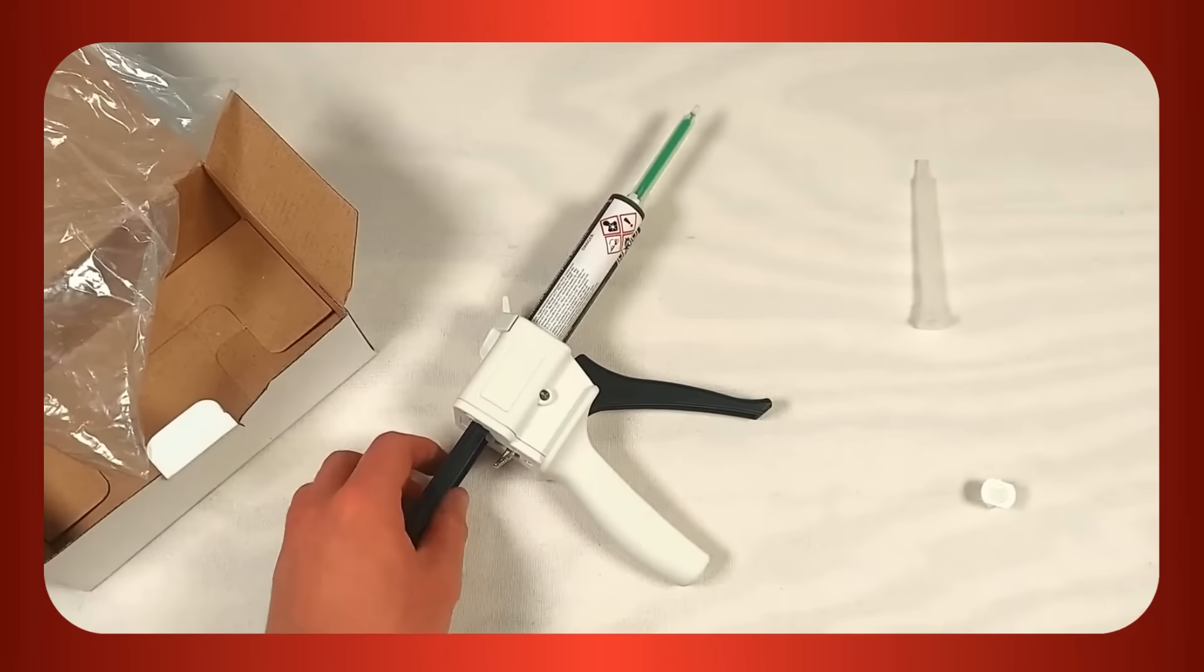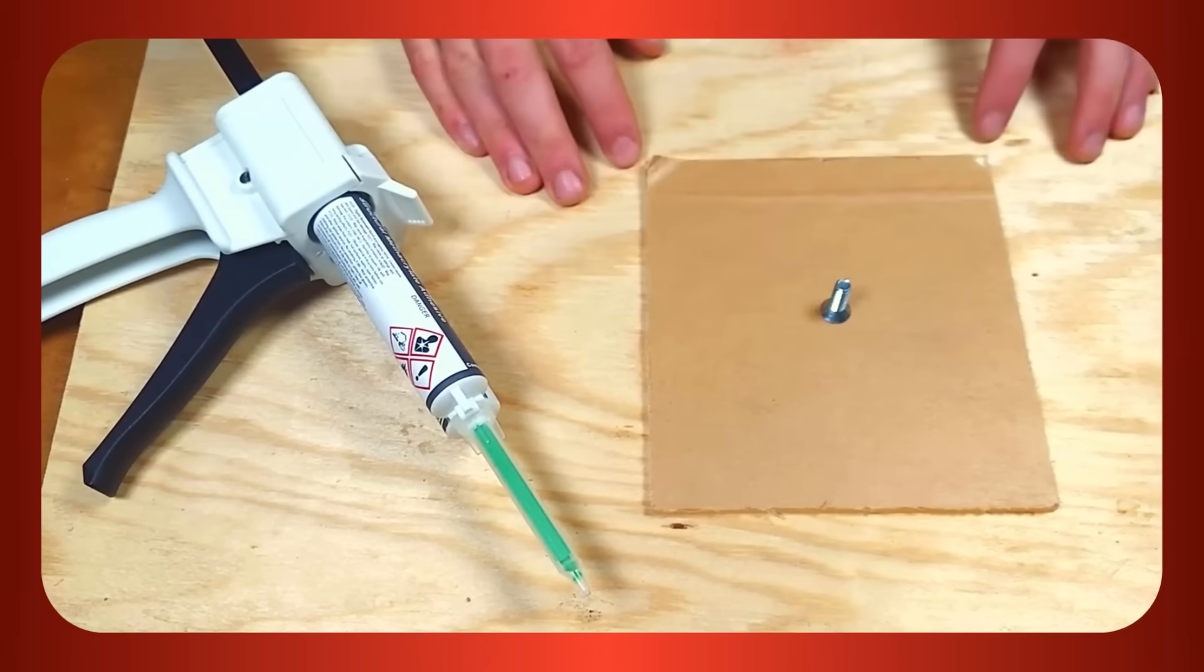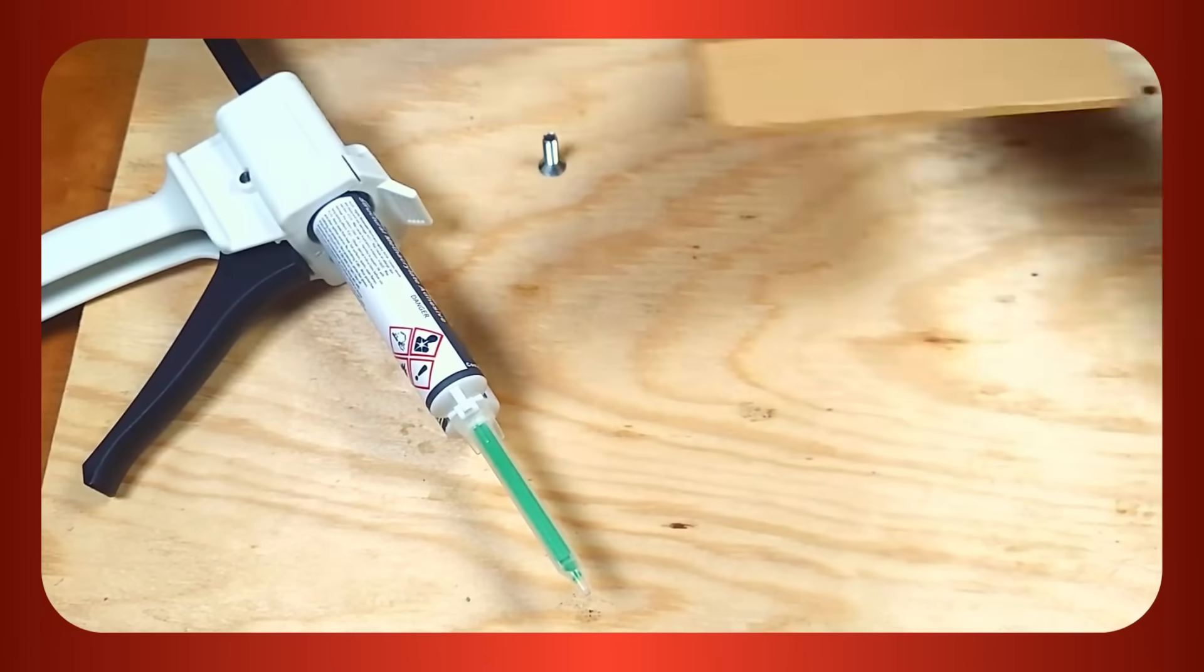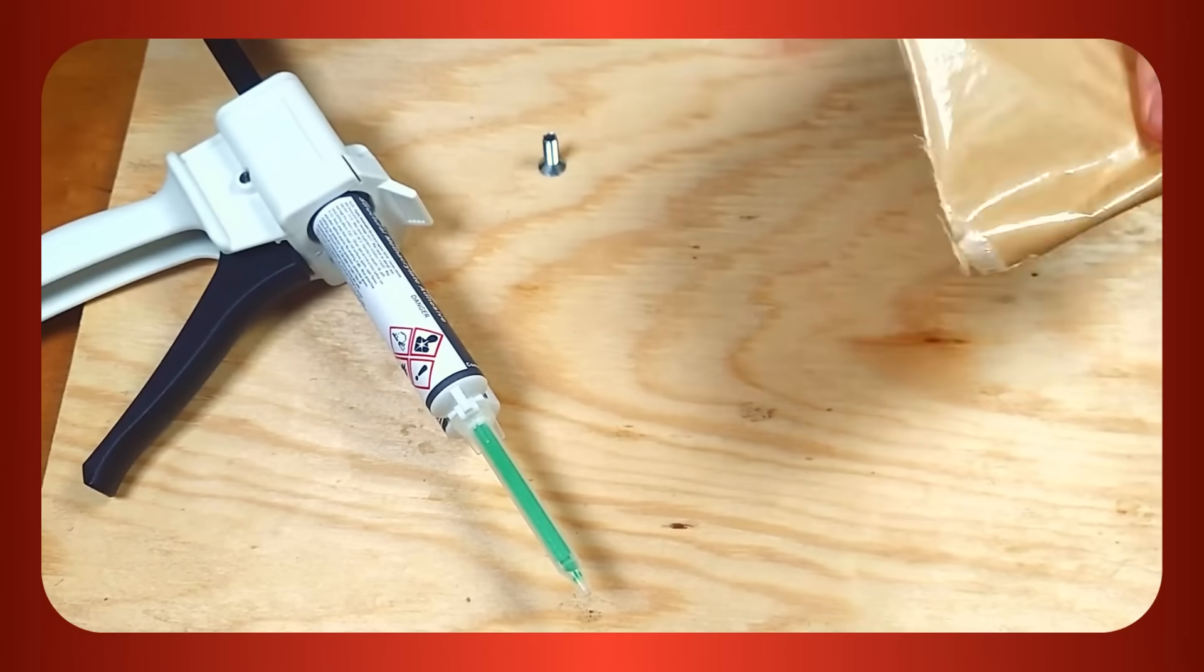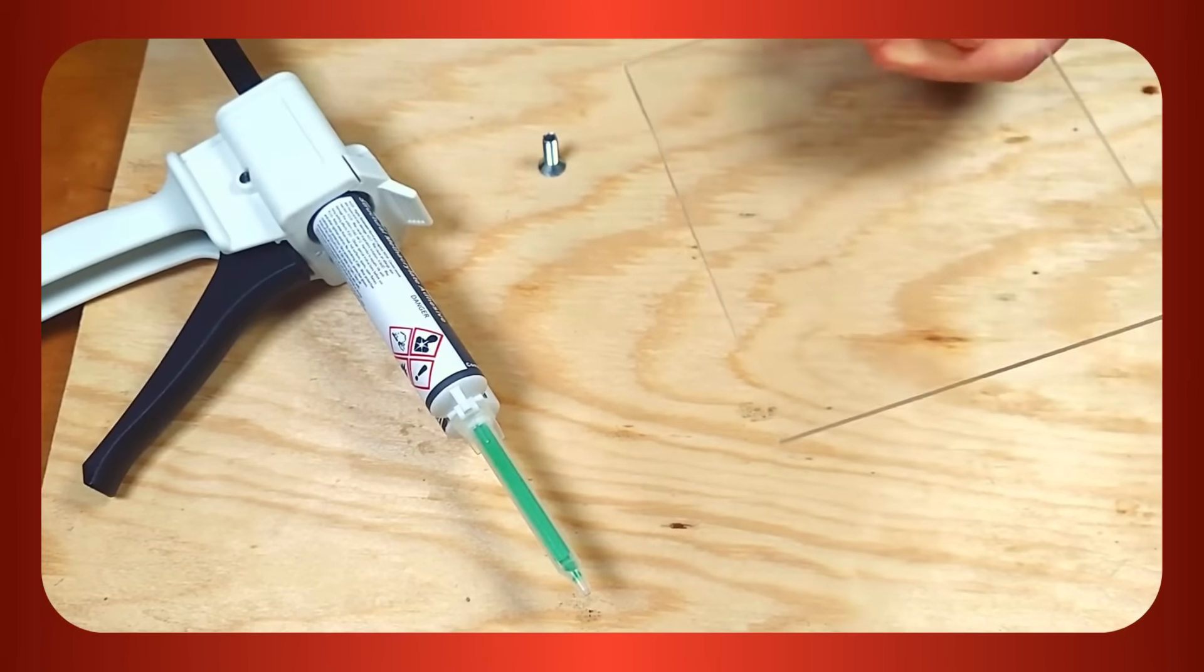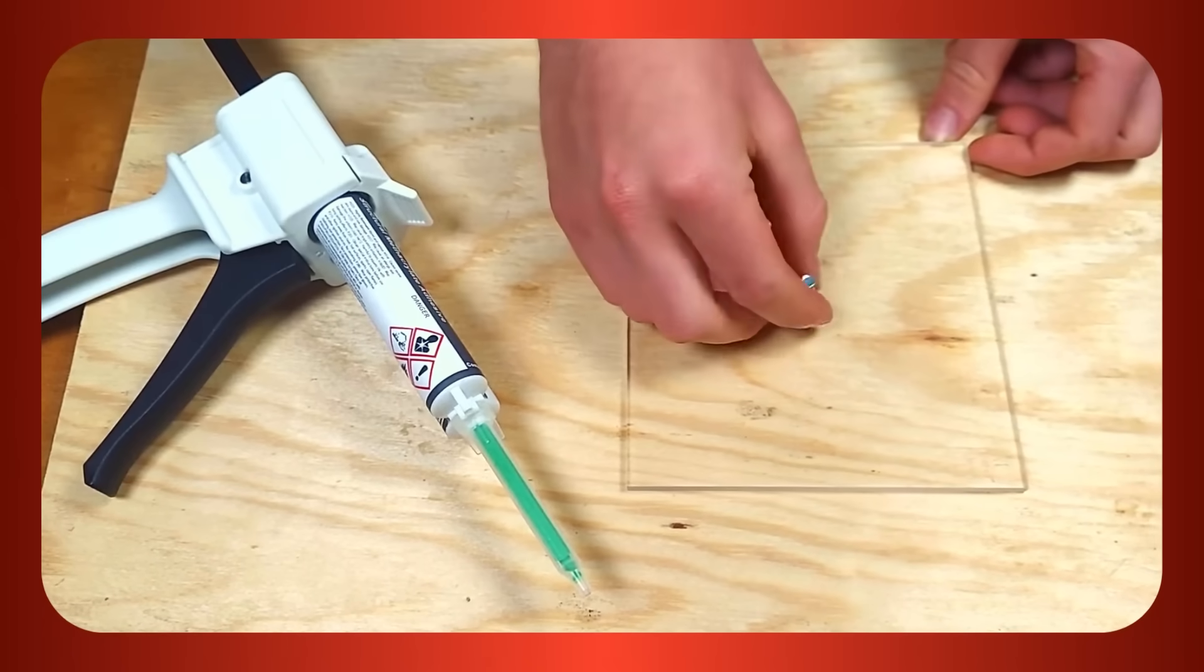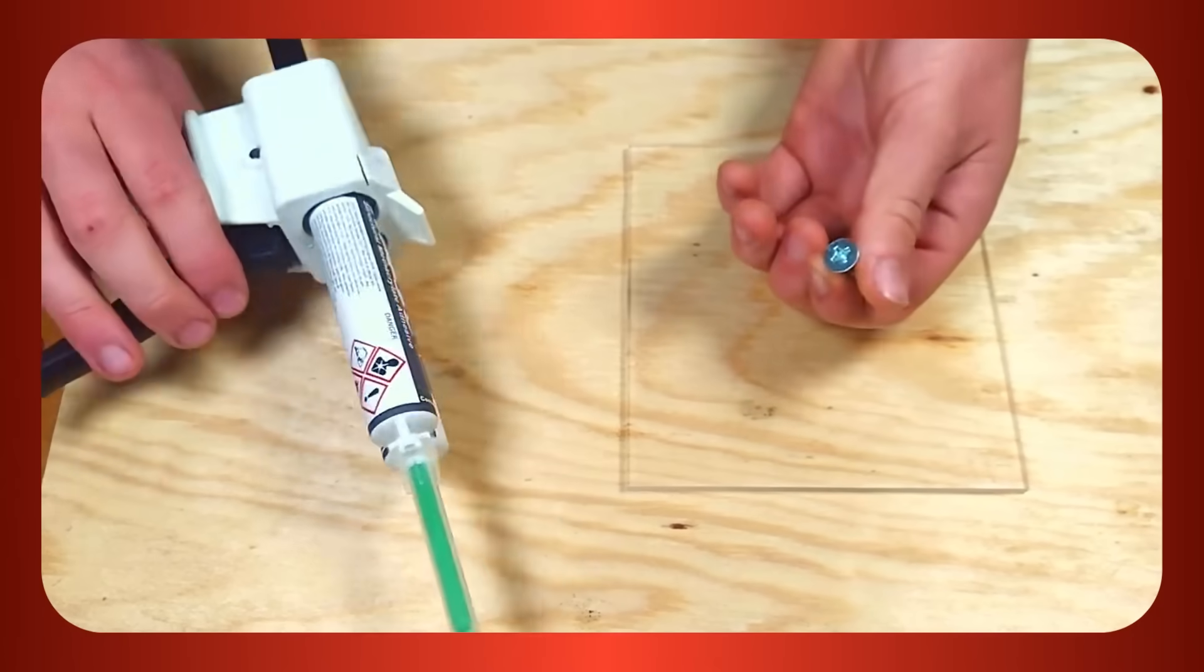We're going to fix this bolt to some acrylic to demonstrate the gun and adhesive in action. It is generally recommended that you clean the surfaces before gluing using denatured alcohol or acetone, but in this case the cover paper saves us the job. Simply squeeze the trigger to push the glue through the nozzle and out the end.